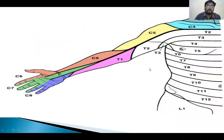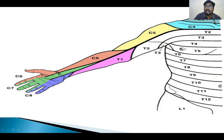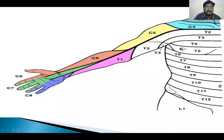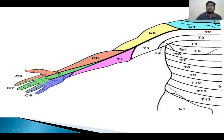Coming to the common dermatomal innervation of spinal nerves for the upper limb: C5 supplies the sensory supply of the lateral aspect of the arm; C6 — lateral aspect of the forearm, thumb, and index finger; C7 — middle finger of the hand; C8 — ring finger, little finger, and medial aspect of the arm and forearm.